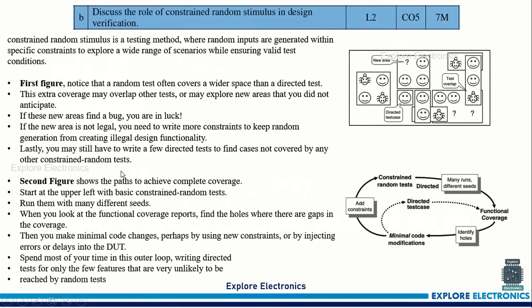The next question: discuss the role of constraint random stimulus in design verification. A figure is given here, and another diagram in the textbook clearly shows how directed stimulus and random stimulus differ. You can write this diagram and describe the directed tests, how there is some test overlap, and the advantages of using constraint random stimulus. The second figure indicates how to achieve complete coverage using constraint random stimulus.